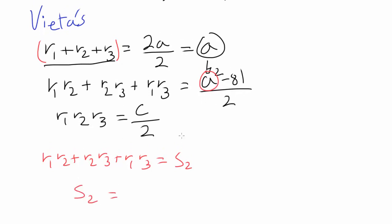So we have the second symmetric sum is equal to a². When you square this quantity, you're going to get r₁² + r₂² + r₃² plus 2 times the second symmetric sum, because you're going to have r₁r₂ and r₂r₁, and similarly for r₁r₃ and r₂r₃. So you have 2 times S₂ minus 81, and you want to divide this by 2.